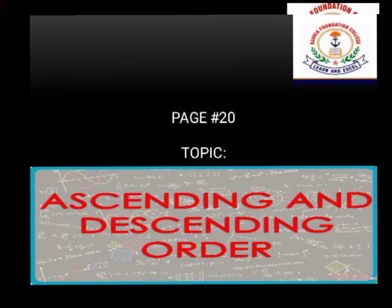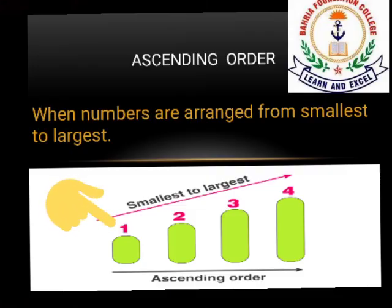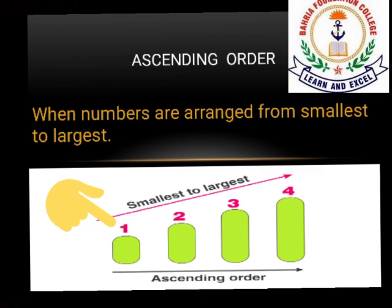So class, before starting our exercise, first I'll explain you about ascending and descending order. First is ascending order. When numbers are arranged from smallest to the largest, they are called ascending order.